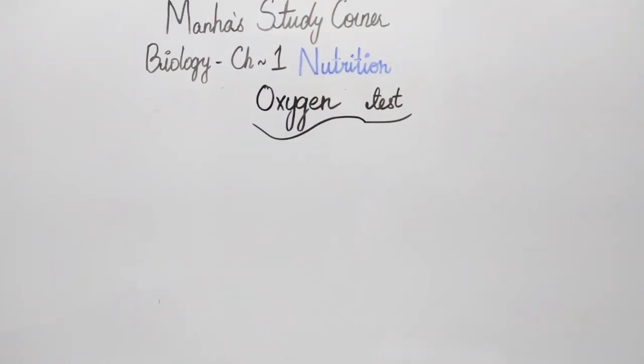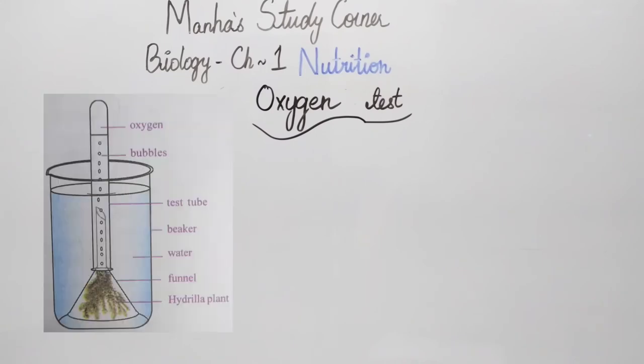Now let us perform an experiment to test the most important byproduct of photosynthesis, that is oxygen. So to test if oxygen is produced by photosynthesis, we will take an aquatic plant, Hydrilla or Elodea. We will put this aquatic plant in a beaker and then invert a funnel on it such that it is not at the bottom of the flask. Next, we will take a test tube and fill it with water and invert the test tube on the flask.